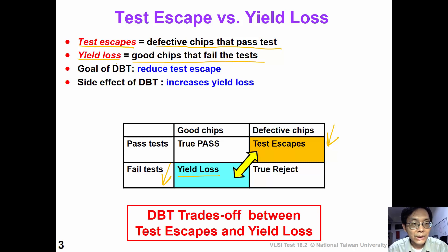Unfortunately, if we perform defect-based testing, the side effect is that sometimes we may increase yield loss. So, DBT is a trade-off between test escape and yield loss.